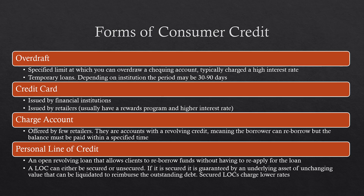There are various different forms of consumer credit. First, you have overdraft — a specified limit at which you can overdraw a checking account, typically charged at a high interest rate, actually the highest of all consumer credit options. It is essentially a temporary loan and depending on the institution the period may be 30 to 90 days.